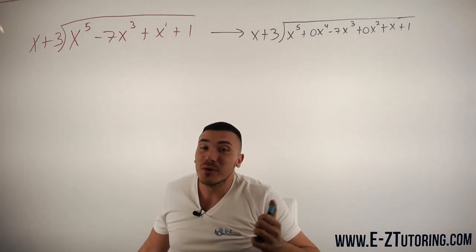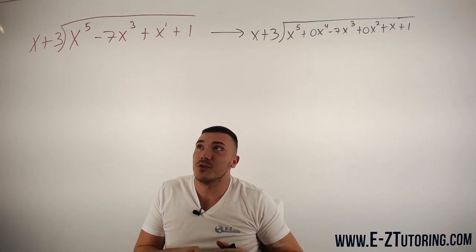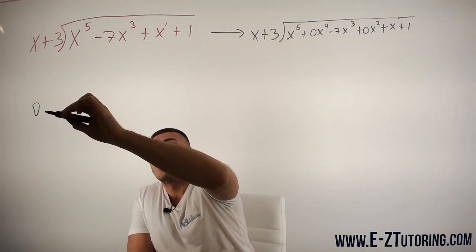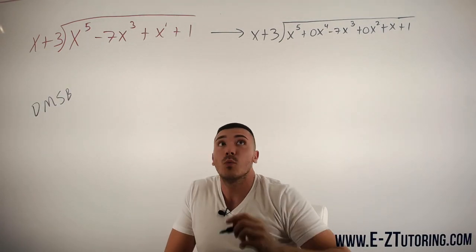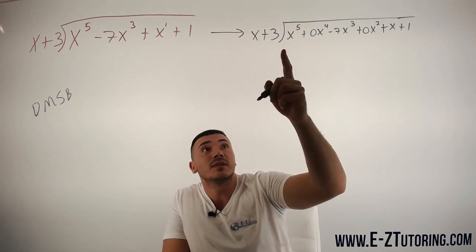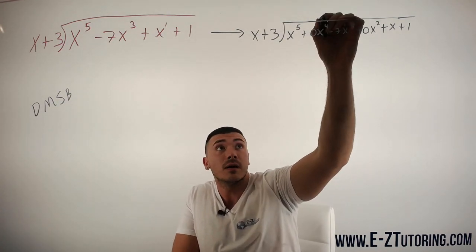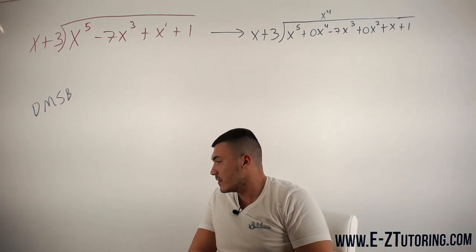So like I said, I'm going to assume you guys already know how to do long polynomial division. We follow DMSB. We divide. We see that x goes in here x to the fourth amount of times. So we put x to the fourth there.